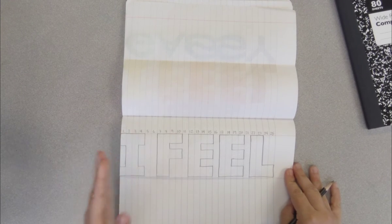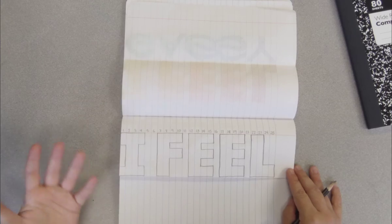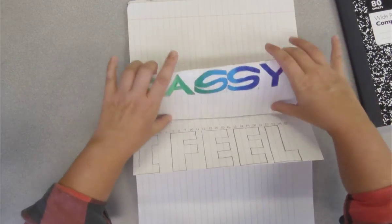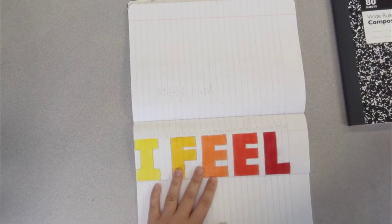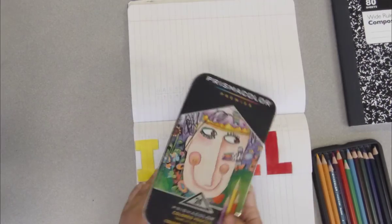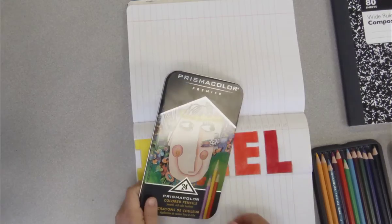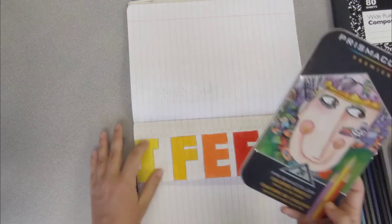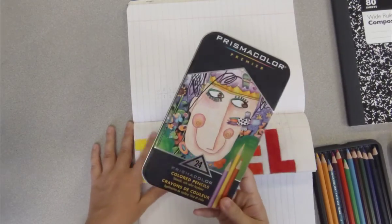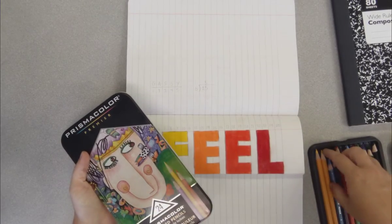When you color this in, it's gonna stand out even more. If you have colored pencils or markers or crayons or something that you want to use, I use these Prismacolor colored pencils. I have these at home and they're just super smooth like butter. I love coloring with these things.